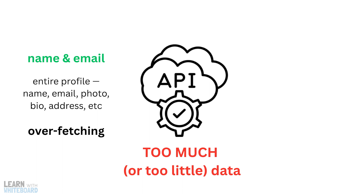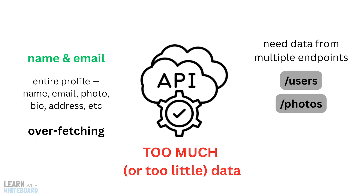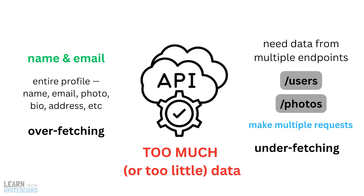And further, if you need data from multiple endpoints, like slash users and slash posts, you might have to make multiple requests, and that's called underfetching.